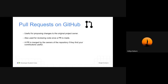Next comes pull requests. Pull requests are most important for open source contributions and they also help for collaboration on GitHub. After you fork a project and make changes, if you think those changes are helping or enhancing the original code, you can send a pull request.